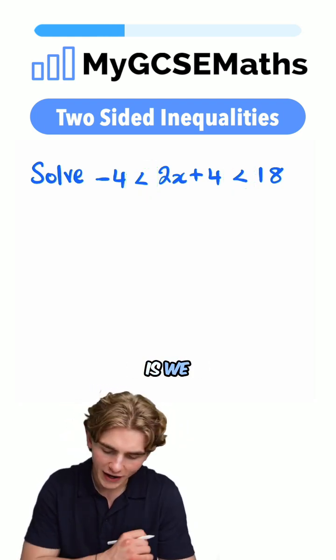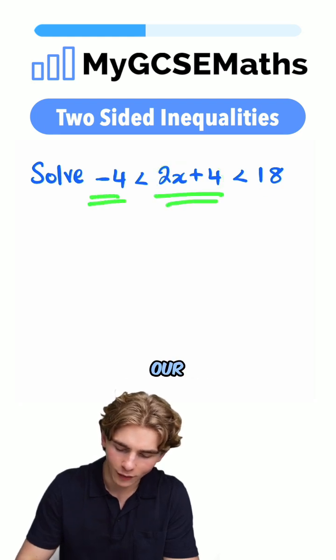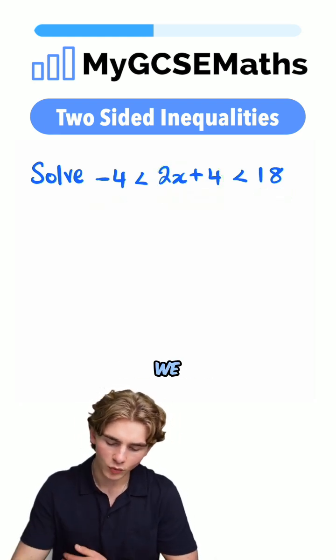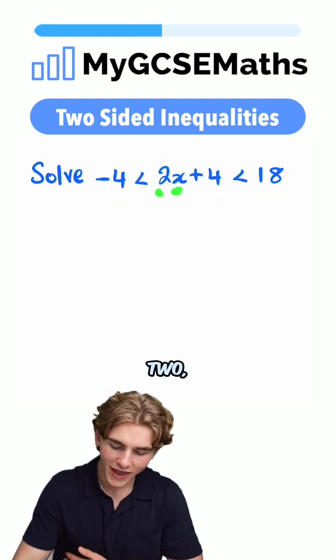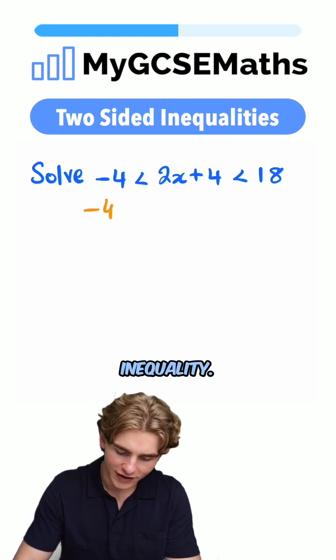What we have to do is make sure that whatever we do to get our x on its own, we do to all three parts of our inequality. So at the moment, we have x multiplied by two, add four. We're going to firstly subtract four from all parts of our inequality.